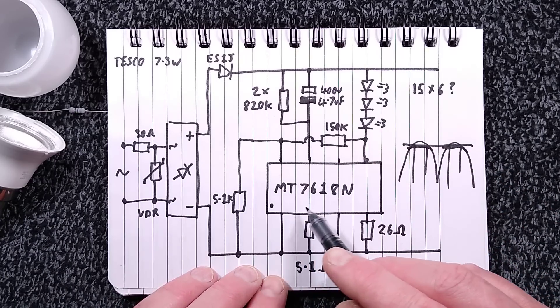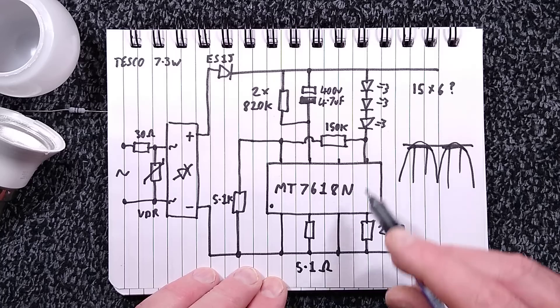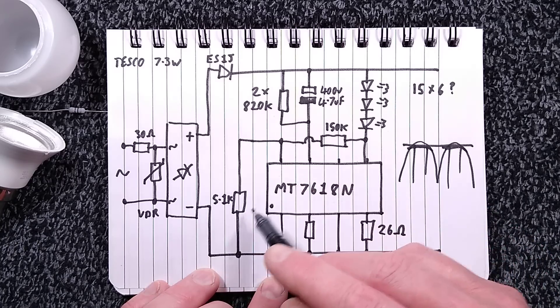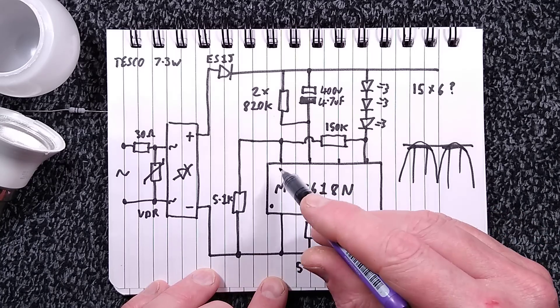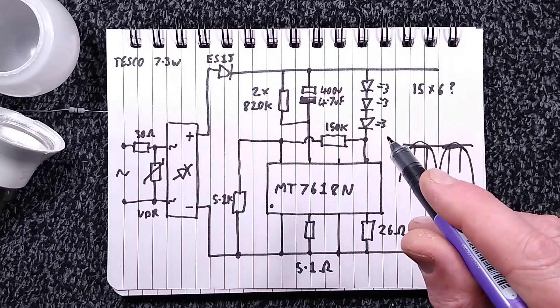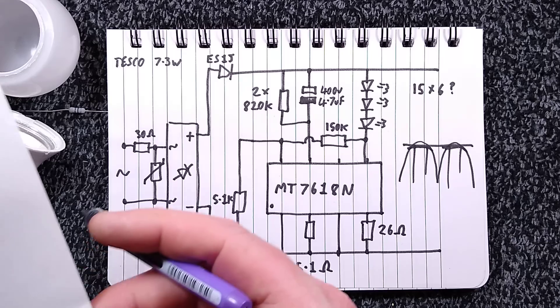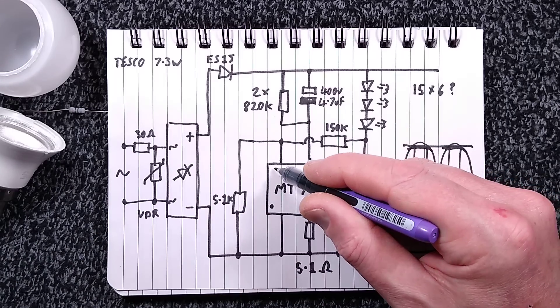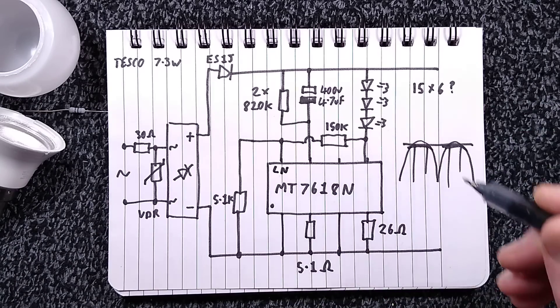So there's that 5.1 ohm resistor. I'm not sure what else is in this chip. Rather unhelpfully, there's this resistive divider which looks like it's going to some sort of sense input. And the data sheet simply tells you that this pin is called LN. I haven't a clue what that's for.